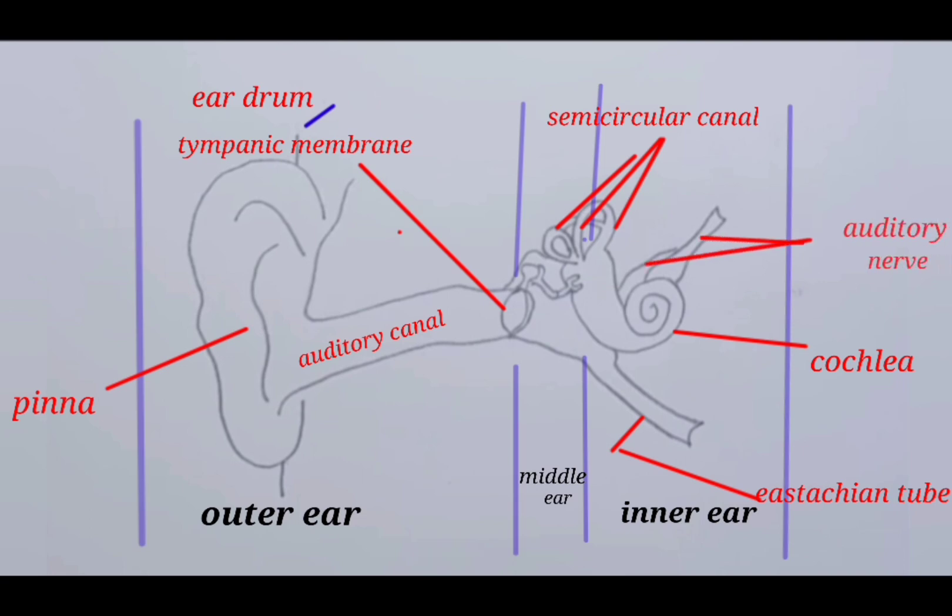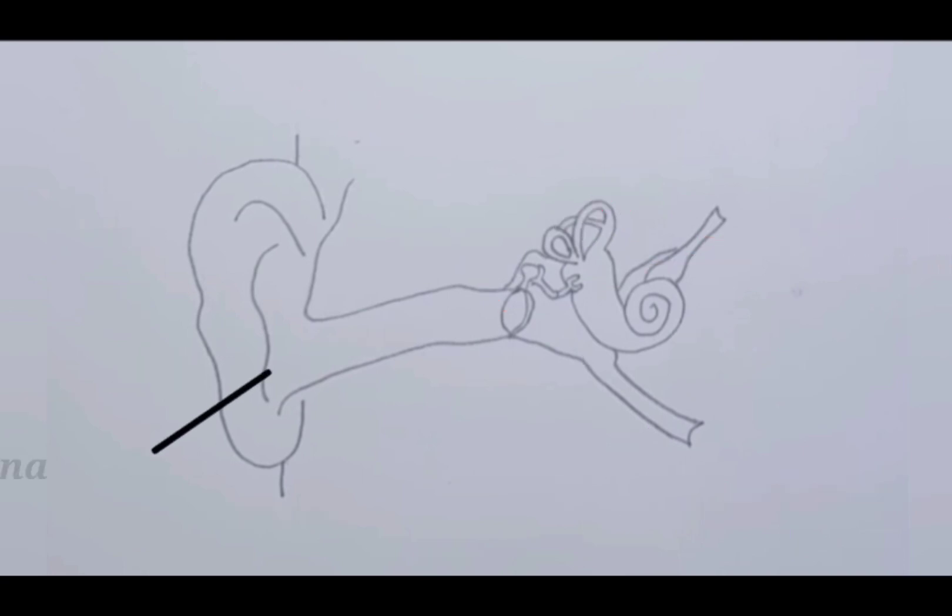In the outer ear, we start from the pinna, which is also called the auricle. The pinna is the only visible part of the ear. With its special helical shape, it is the first part of the ear that contacts and reacts with sound. The function of the pinna is to collect sound waves.